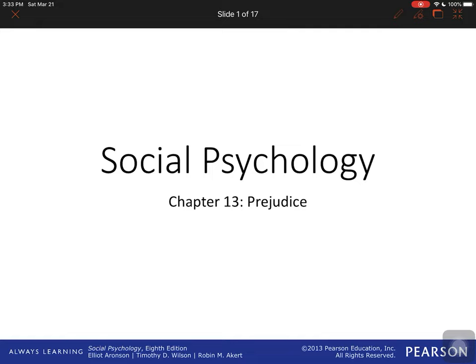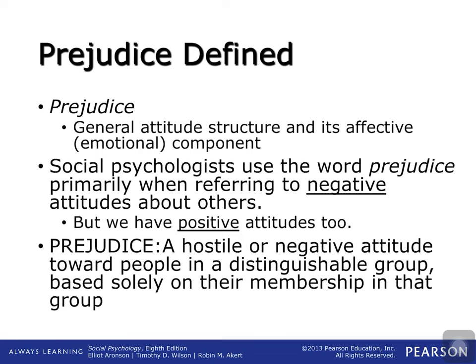We need to define what prejudice is. This is part of the larger idea of attitude, which we've covered before. Attitudes are composed of three major components — the ABCs of attitudes. A is the affective component, which is our emotional component. B is the behavioral component, and C is the cognitive component.